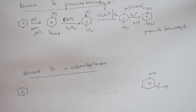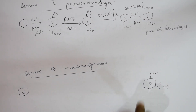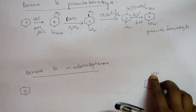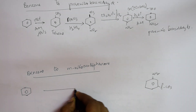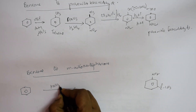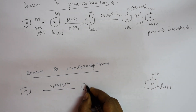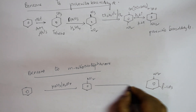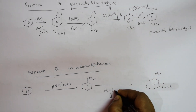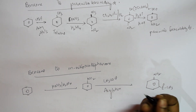I need to introduce the NO2 group (via nitration) and the COCH3 group (via acylation). First, do nitration using HNO3 and H2SO4 to get nitrobenzene.